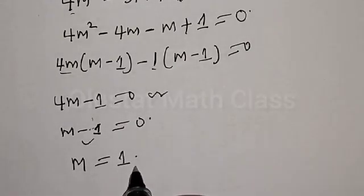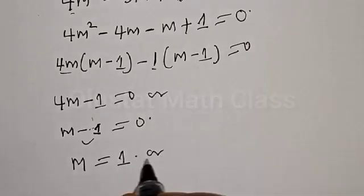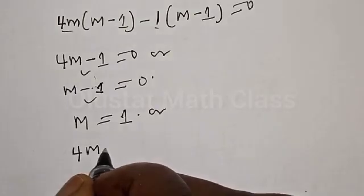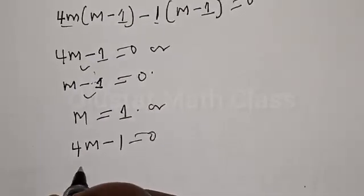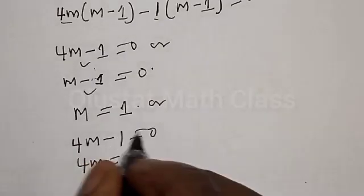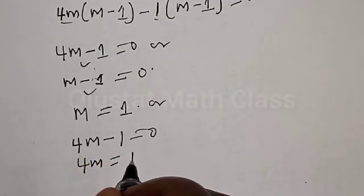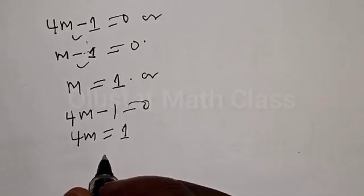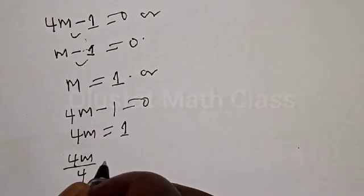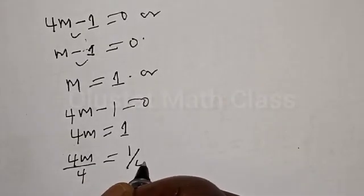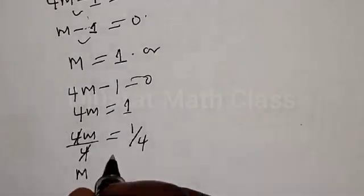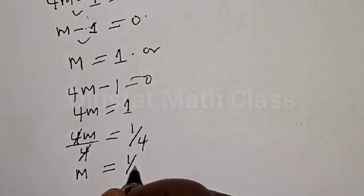From m minus 1 equal to 0, we get m equal to 1. From 4m minus 1 equal to 0, we have 4m equal to 1. Dividing both sides by 4: m is equal to 1 over 4.